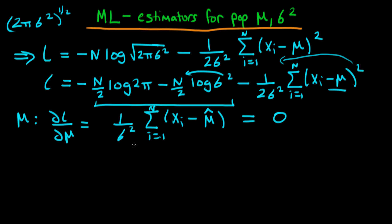Well we can multiply this whole thing through by sigma squared because that doesn't affect the 0 right? So we're going to have that the sum from i equals 1 to n of xi minus mu is equal to 0.